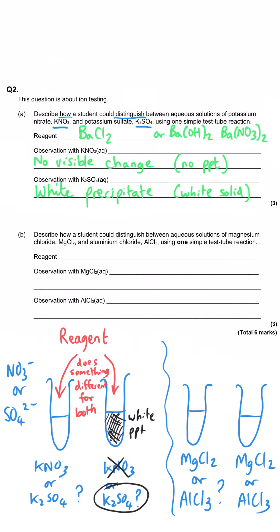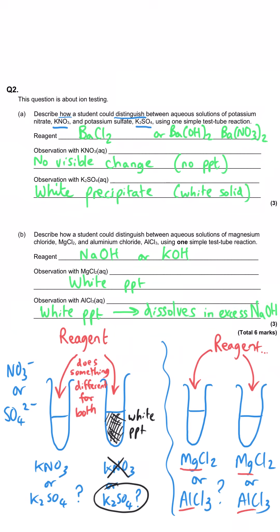The next part asks for a test to distinguish magnesium chloride from aluminium chloride. Since both contain chloride, we're differentiating between magnesium and aluminium. The reagent to use is sodium hydroxide or potassium hydroxide. With magnesium chloride you get a white precipitate of magnesium hydroxide. With aluminium chloride you also get a white precipitate, but crucially that precipitate dissolves in excess sodium hydroxide or potassium hydroxide — which is the distinguishing observation.